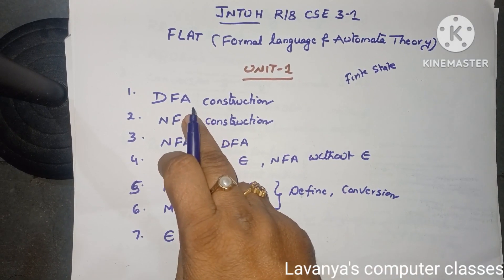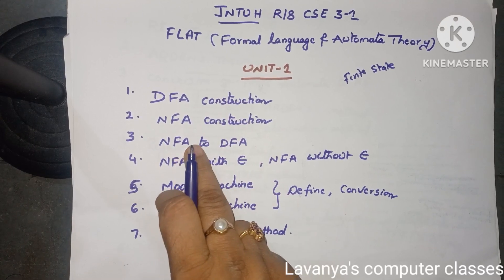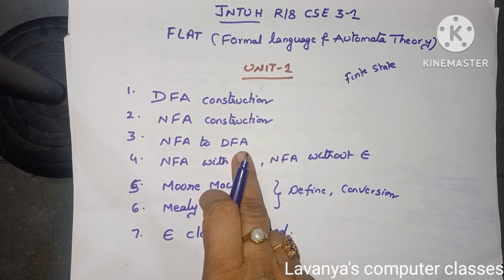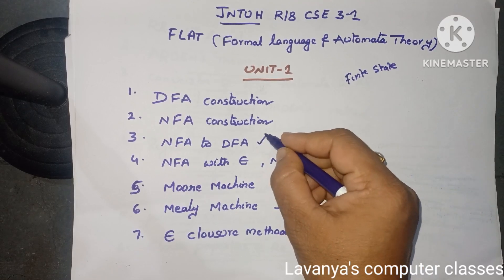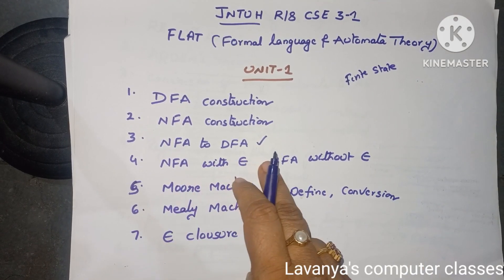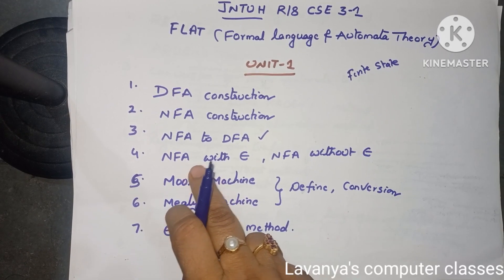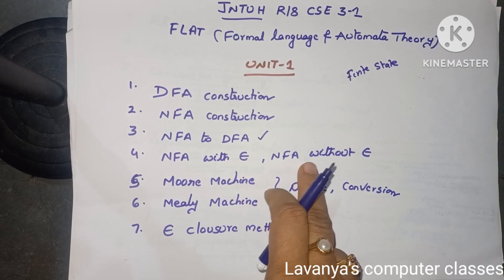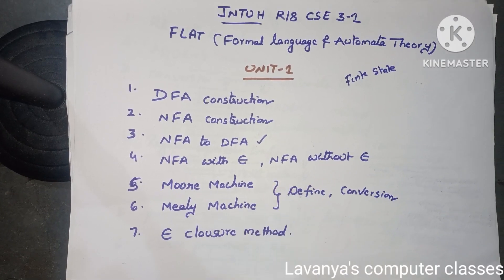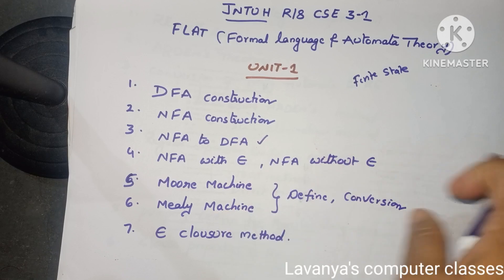The important questions: first is DFA construction — very, very important. Next, NFA construction and NFA to DFA conversion — very repeated questions. Concentrate more on how to convert NFA to DFA. Next is NFA with epsilon, or NFA without epsilon method — this is also appearing in so many papers.